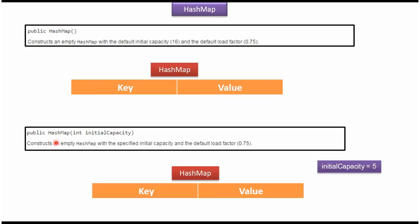This is the second HashMap constructor which accepts the initial capacity. Suppose if we pass initial capacity 5 to this HashMap constructor, it will create an empty HashMap with initial capacity 5 and load factor 0.75.